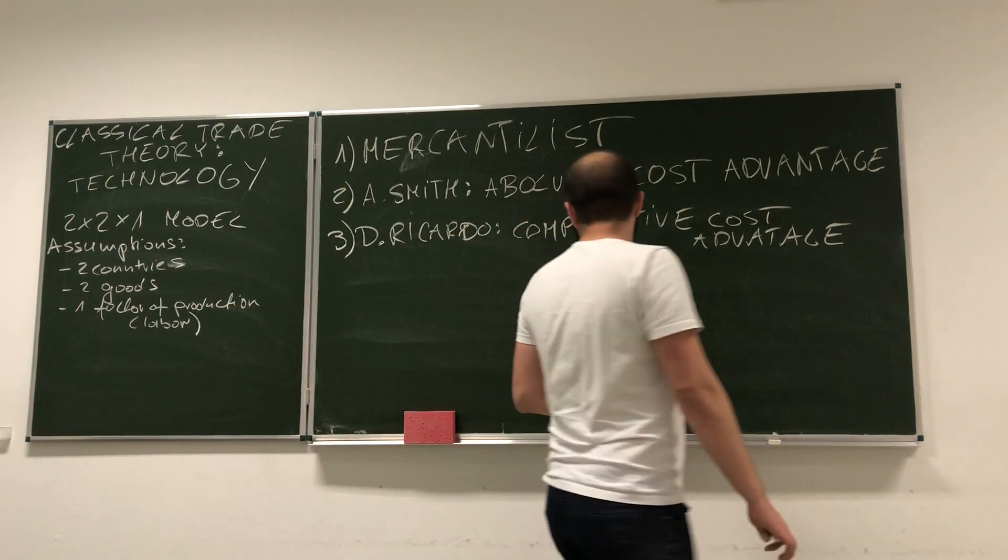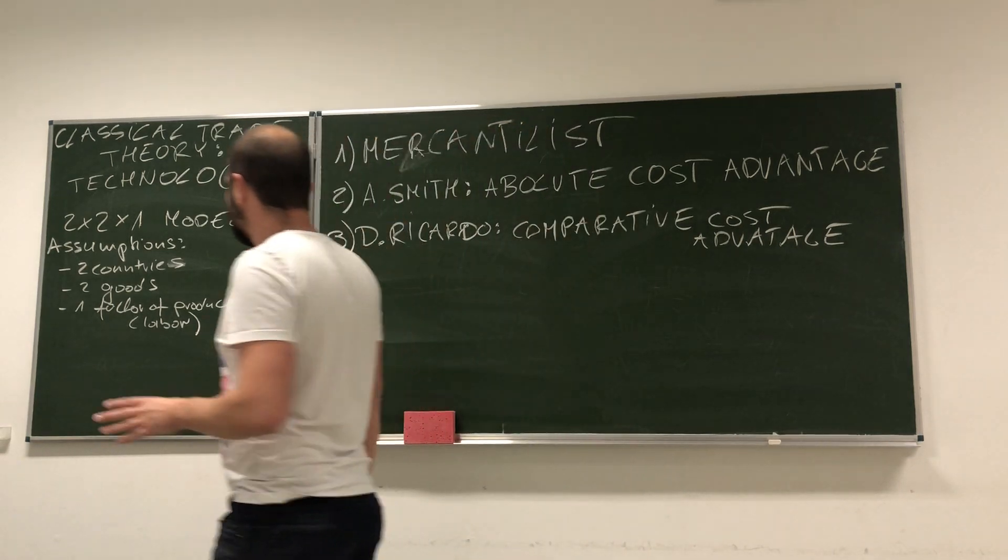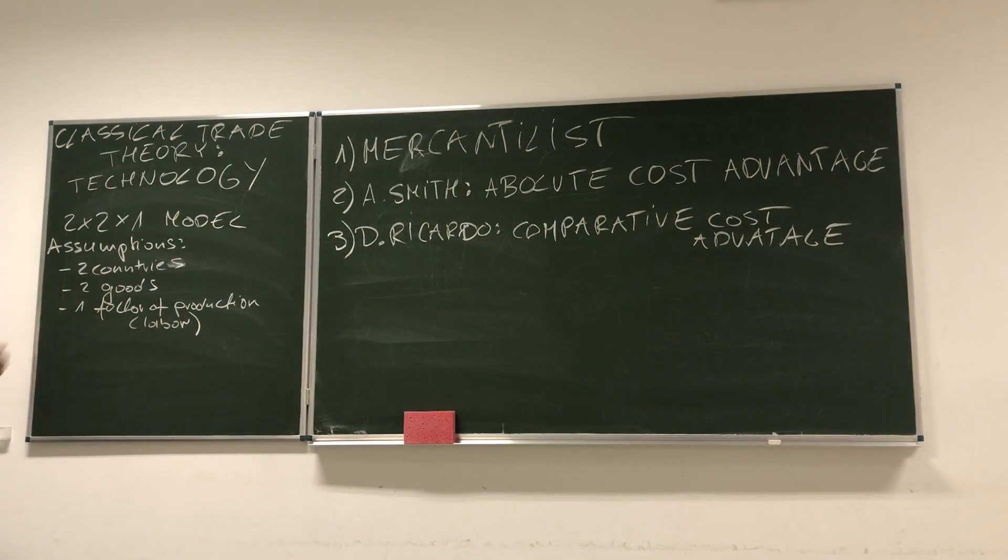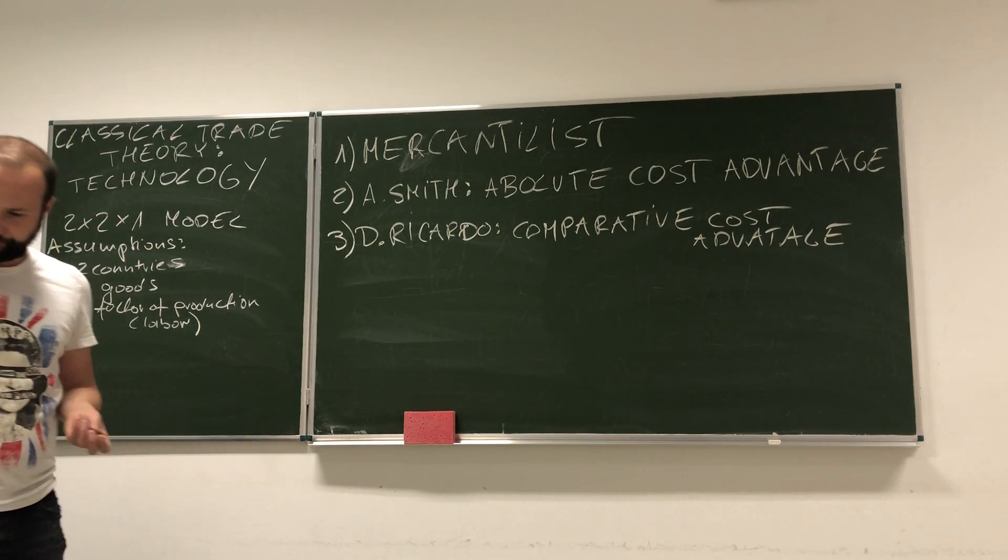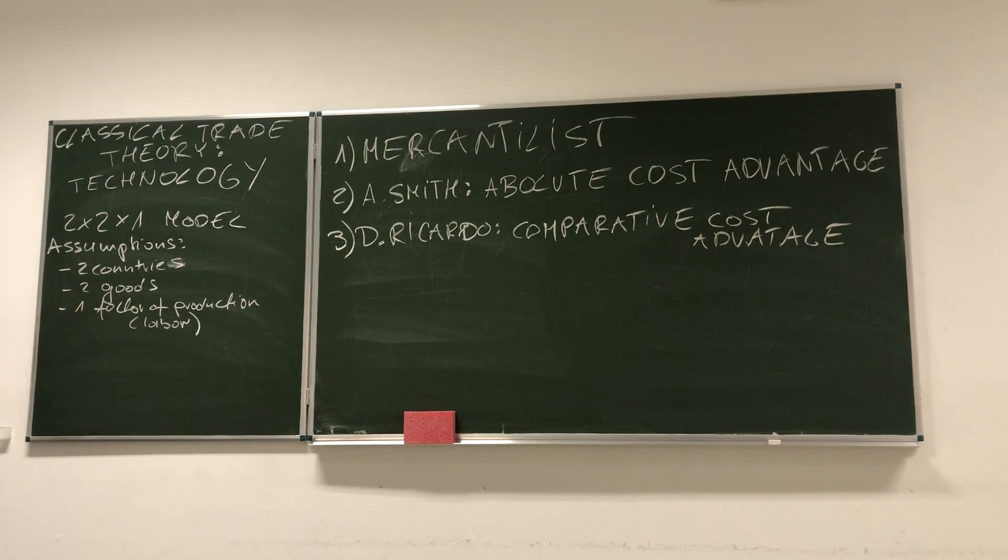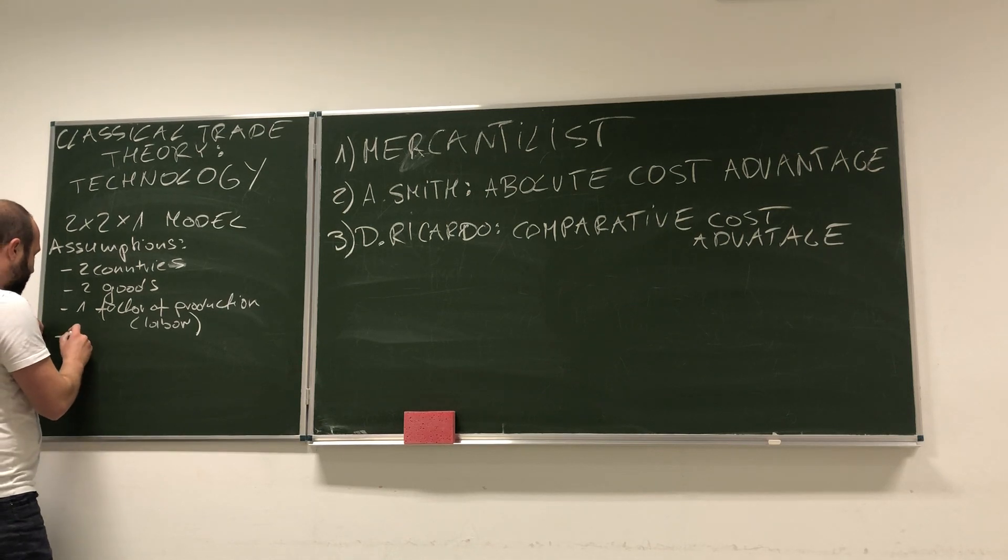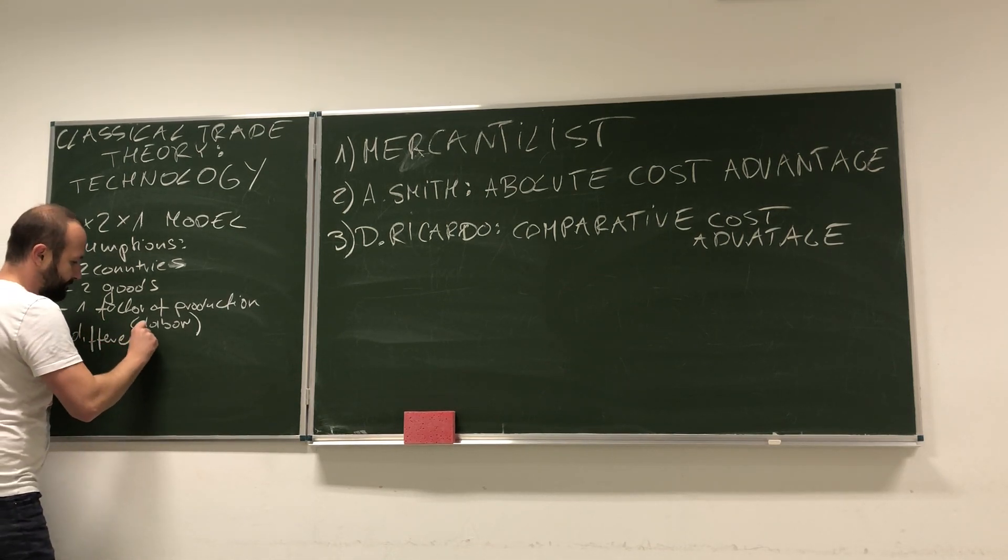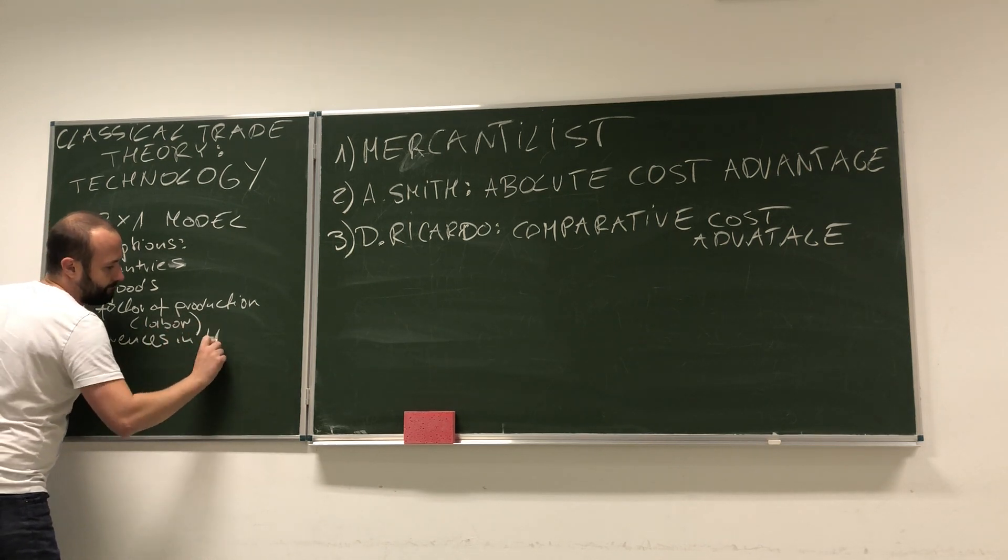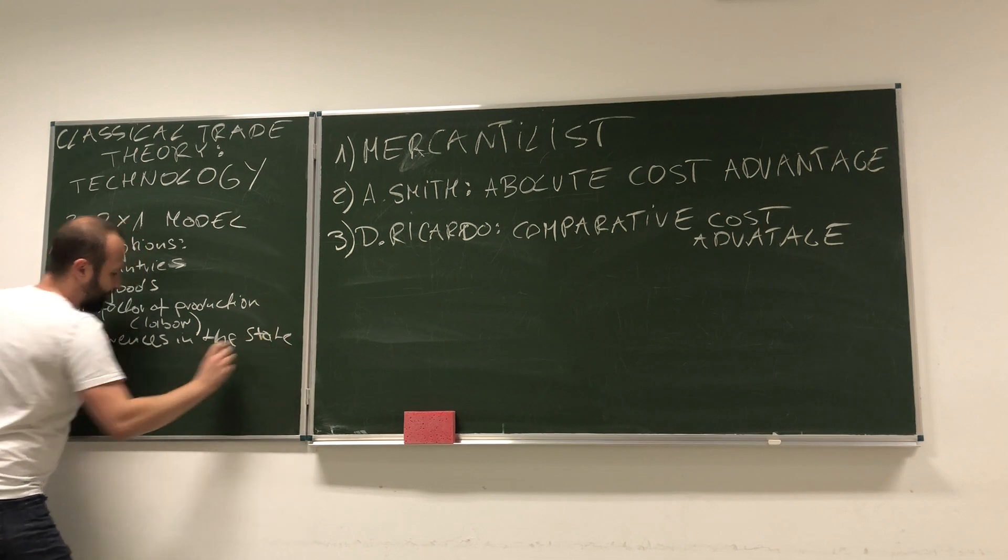But we need to have a little bit more assumptions than this. I believe those are self-explanatory, so we will always be dealing with the model with two countries. We will have two goods that those two countries can produce, and we will have one factor of production. Now, what are the main distinctions between those two countries? The main difference that drives trade in this model is that those two countries exhibit differences in the state of technology.